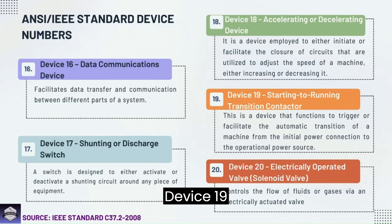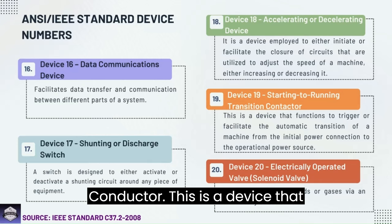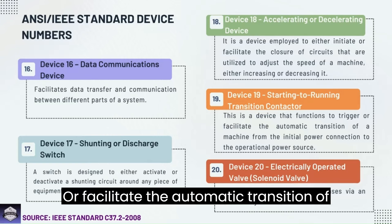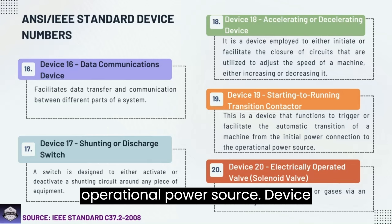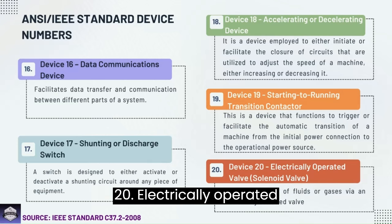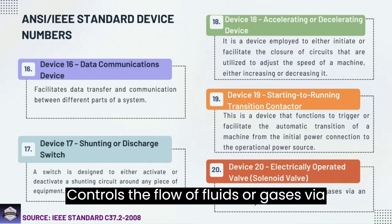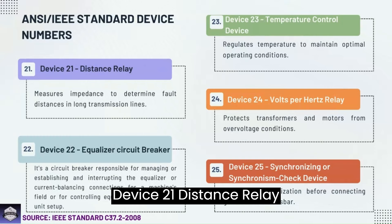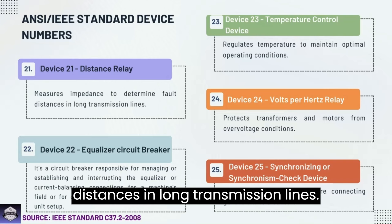Device 19: Starting to running transition contactor — functions to trigger or facilitate the automatic transition of a machine from the initial power connection to the operational power source. Device 20: Electrically operated valve — a solenoid valve that controls the flow of fluids or gases via an electrically actuated valve. Device 21: Distance relay — measures impedance to determine fault distances in long transmission lines.